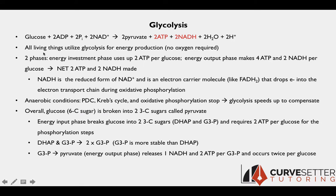Glycolysis is the conversion from one glucose into two pyruvate molecules. Specifically, per glucose, it produces two ATP and two NADH molecules. This is the overall reaction of glycolysis. You don't need to memorize the overall reaction, but you do need to know that glucose is the substrate, and two pyruvates is the product, plus two ATP and two NADH per glucose are produced.